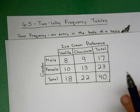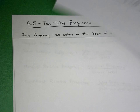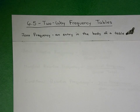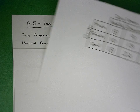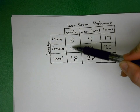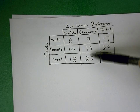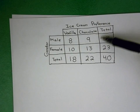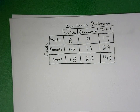Those are all joint frequencies: eight, nine, ten, and thirteen. The other vocabulary term is marginal frequency, which is an entry in the margins — the total rows and total columns. Marginal vanilla is 18, marginal chocolate is 22, marginal male is 17, marginal female is 23. And again, 40 is called our grand total.